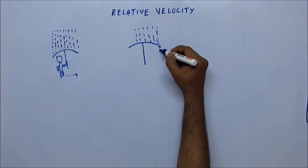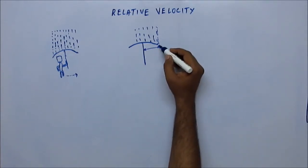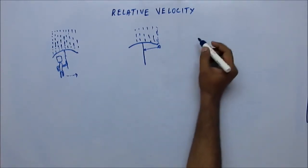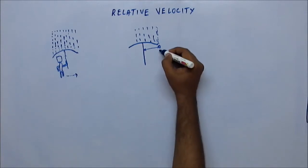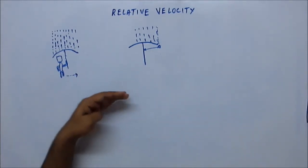So after some time when the rain droplet comes down a certain distance, the distance with Tom's eye or with Tom's body is going to reduce. When the rain comes down a little, Tom is also going to go near to the rain.